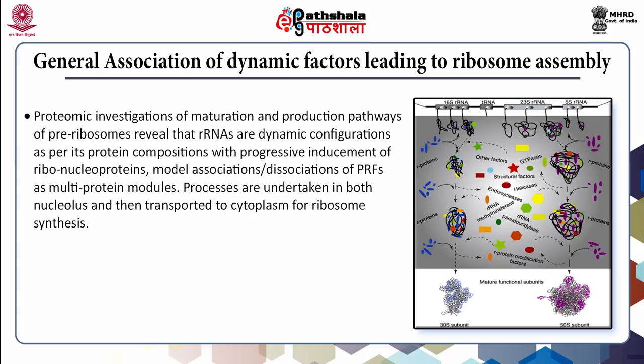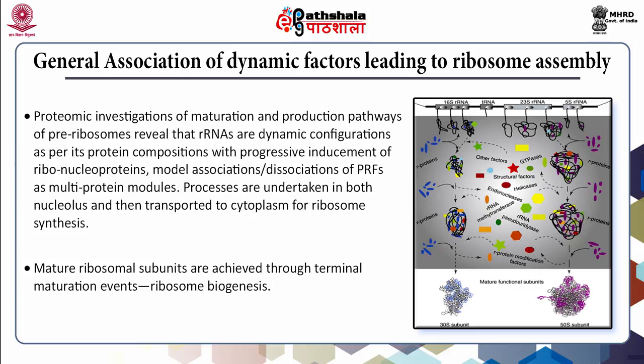Proteomic investigations of the maturation and production pathways of pre-ribosomes reveal that rRNA processing includes a highly dynamic configuration of protein compositions, with progressive inducement of ribonucleoproteins and associations and dissociations of PRFs as individual factors or as multi-protein modules. Processes usually undertaken in the nucleolus have many maturation events also associated in the nucleoplasm. Pre-ribosomes once formed are transported to the cytoplasm where terminal maturation events generate mature ribosomal subunits. There are varied pathways for pre-rRNA processing as prerequisites of ribosome biogenesis, which differ between unicellular and multicellular eukaryotes.